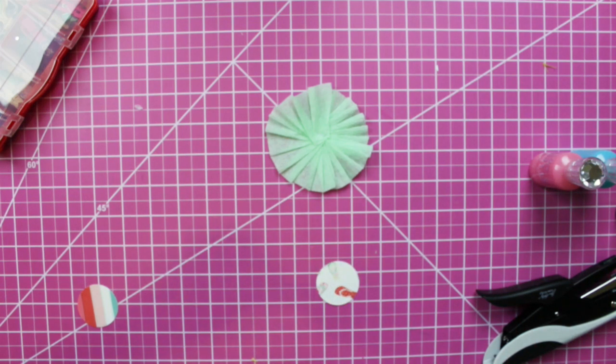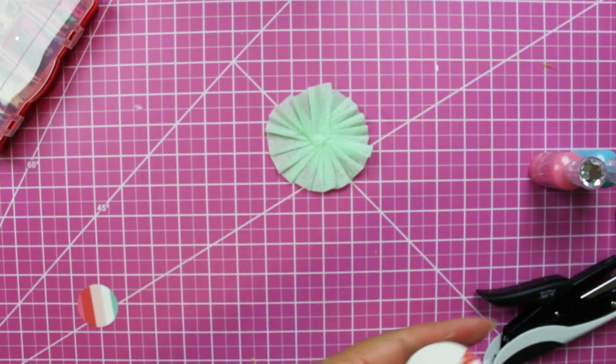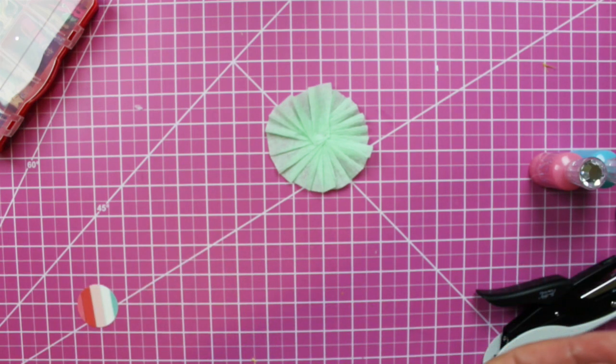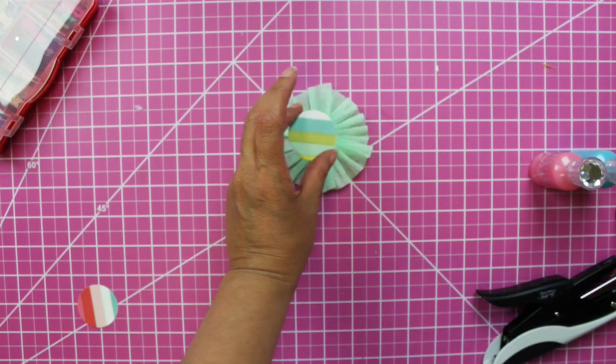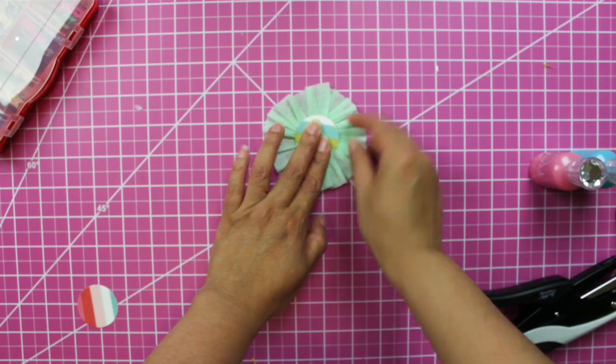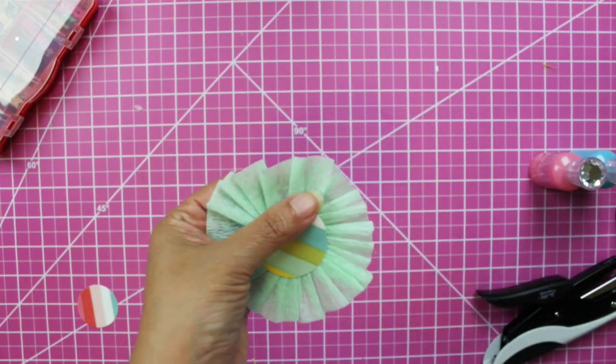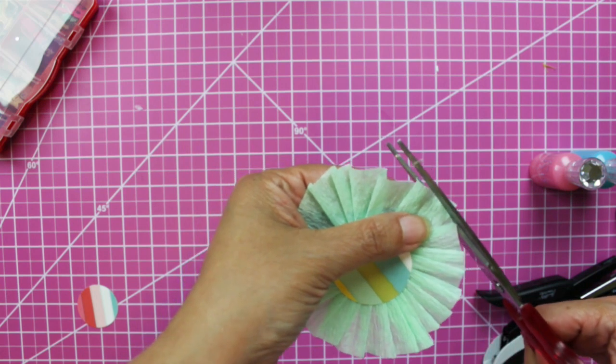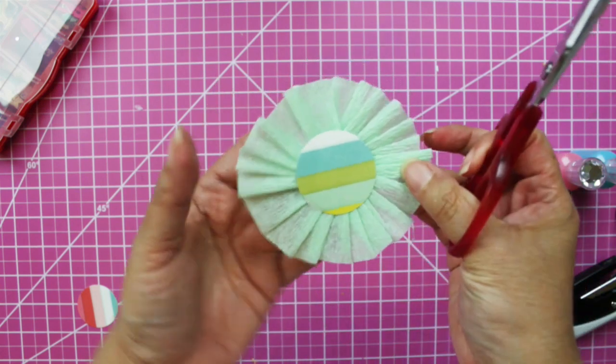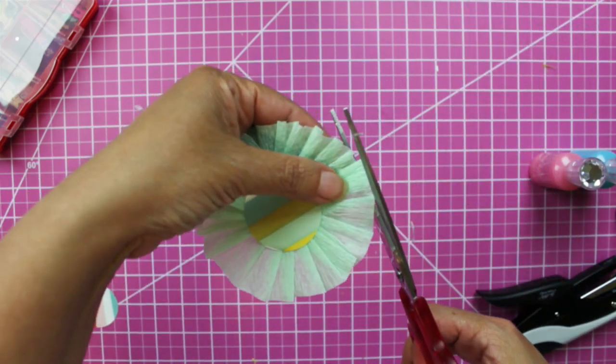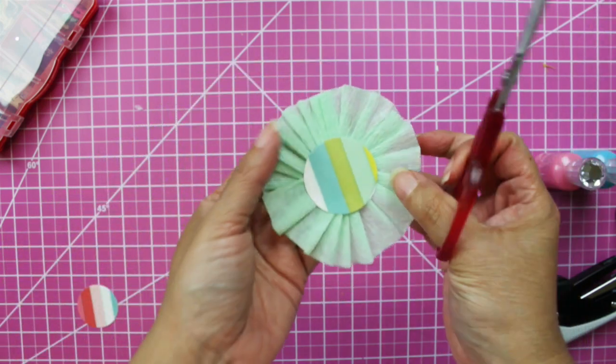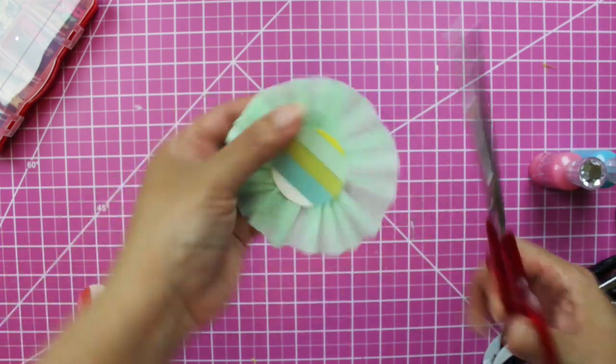And that will determine the true size and shape of the rosette. So now I know that I have to cut this extra.